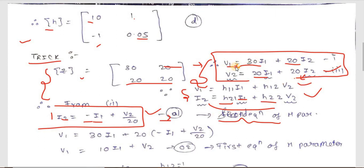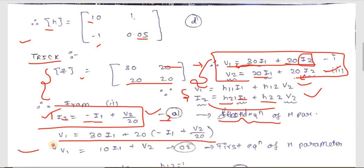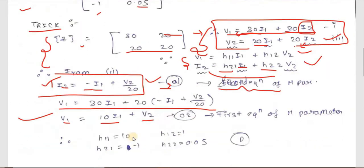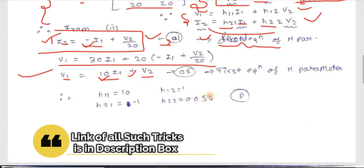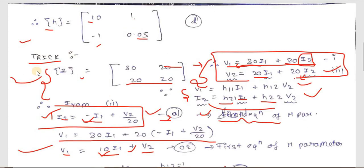For the first h-parameter equation, substitute i2 = −i1 + v2/20 into v1 = 30·i1 + 20·i2: v1 = 30·i1 + 20·(−i1 + v2/20) = 10·i1 + v2. Comparing with v1 = h11·i1 + h12·v2, we get h11 = 10, h12 = 1, h21 = −1, h22 = 0.05 (= 1/20). This trick saves significant time.